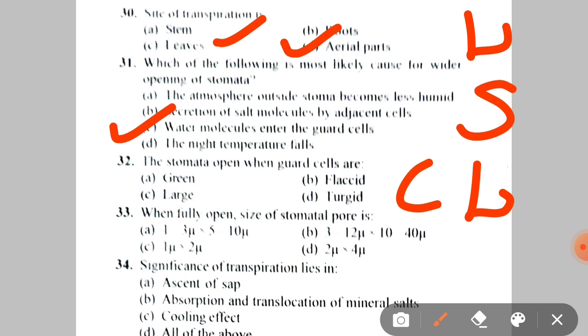Next: the stomata opens when the guard cells are A. Green, B. Flaccid, C. Large, D. Turgid. Obviously, turgid guard cells cause the stomata to open.